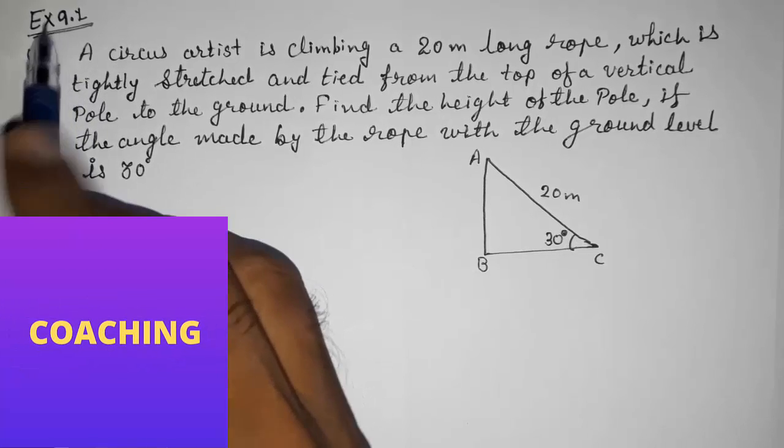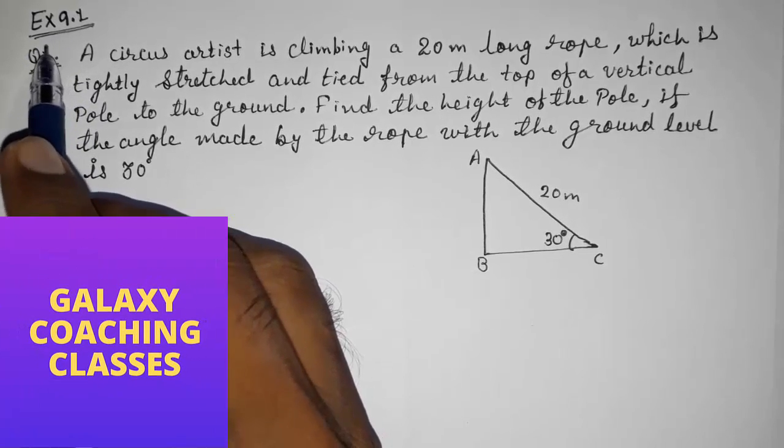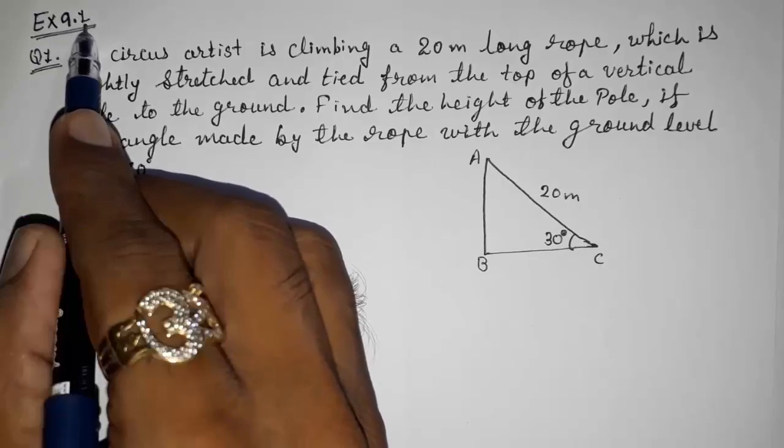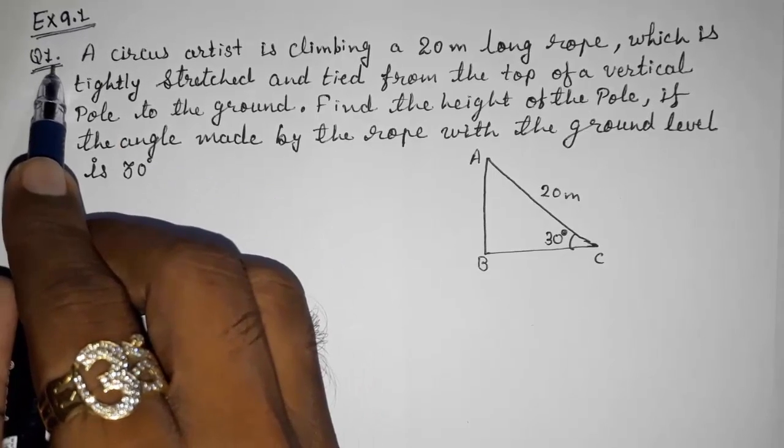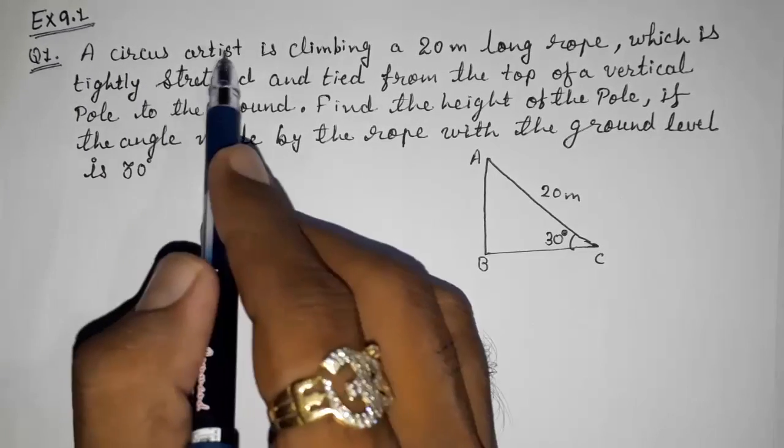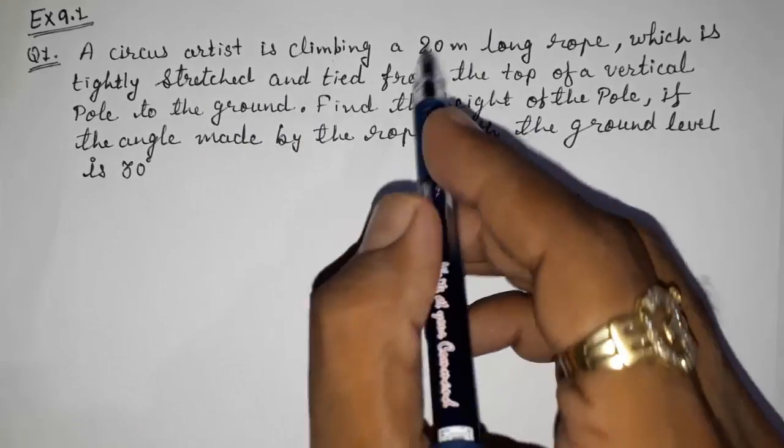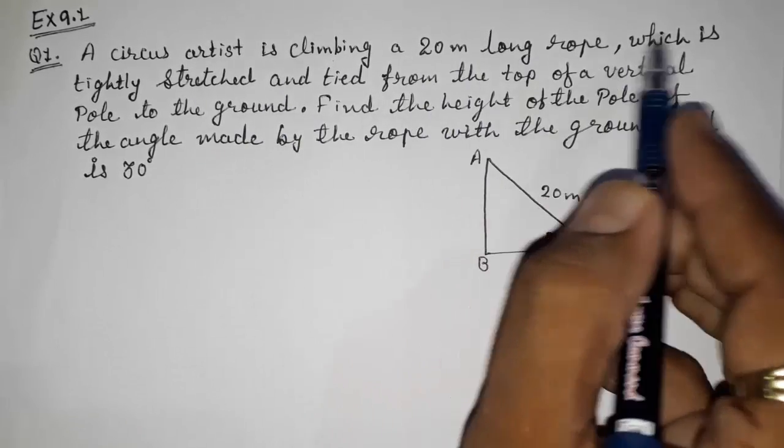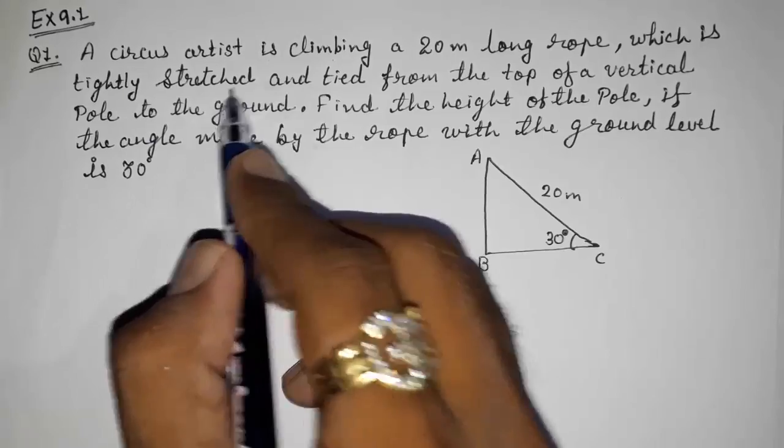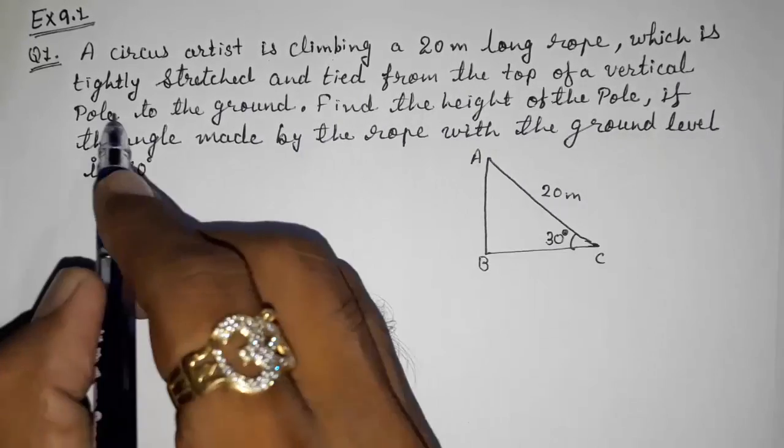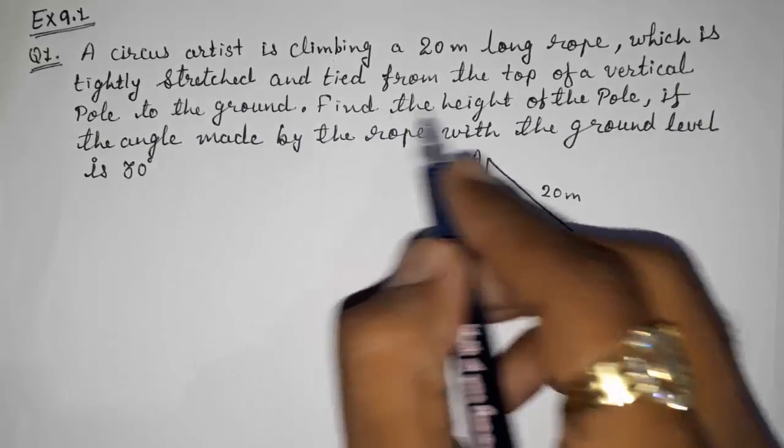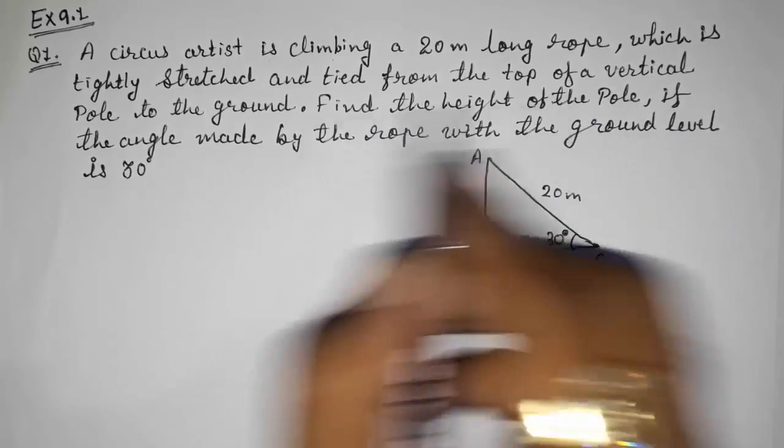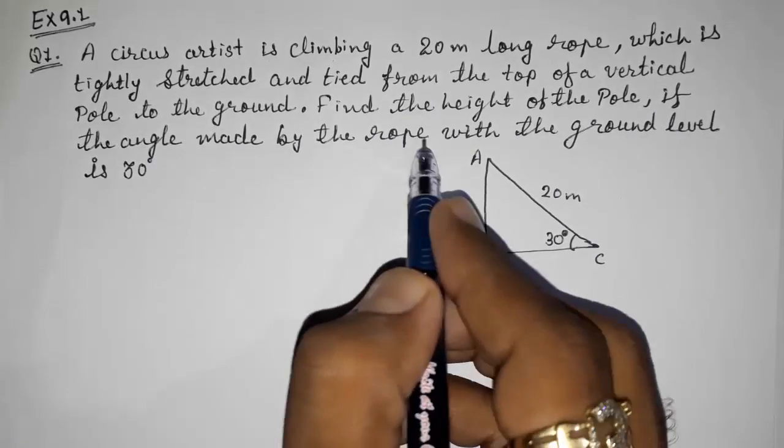Hello friends, today we are going to solve CBSE class 10th maths exercise 9.1 question number 1. A circus artist is climbing a 20 meter long rope which is tightly stretched and tied from the top of a vertical pole to the ground.